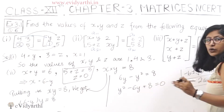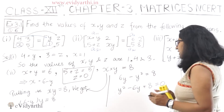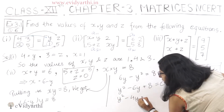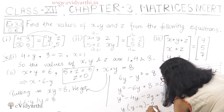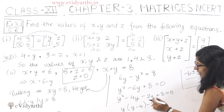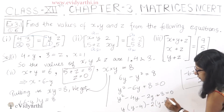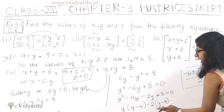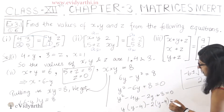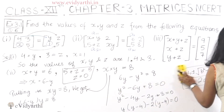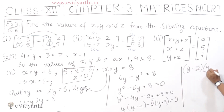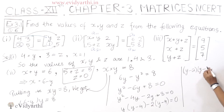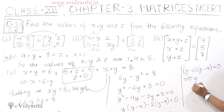So: y squared minus 4y minus 2y plus 8 equals 0. The factors are y minus 4, and we take out common y minus 2. So y minus 2 times y minus 4 equals 0. This means y has two values: y equals 2 or y equals 4.